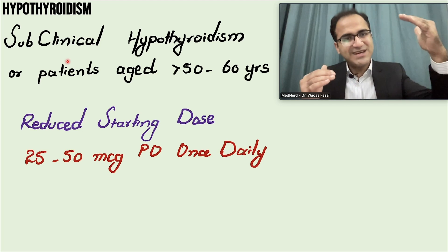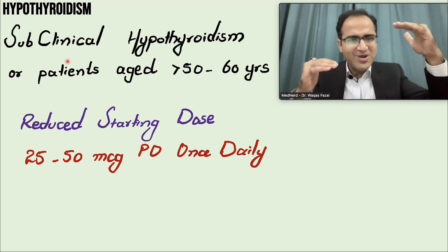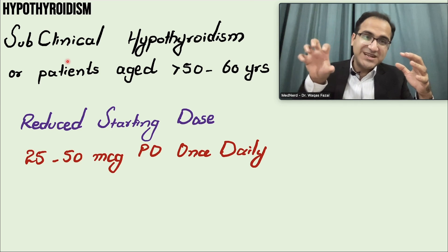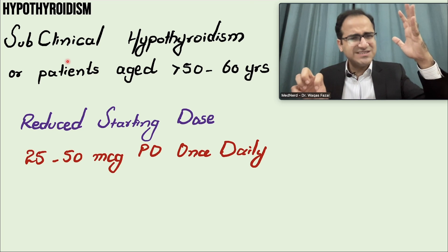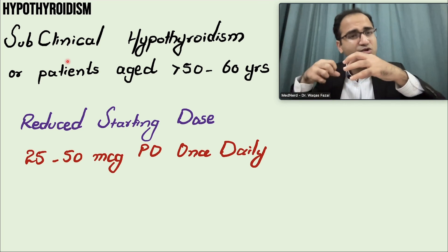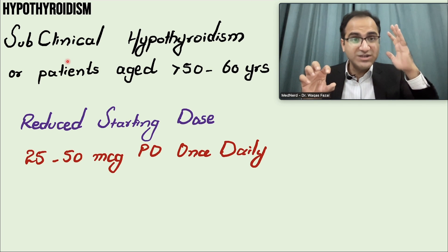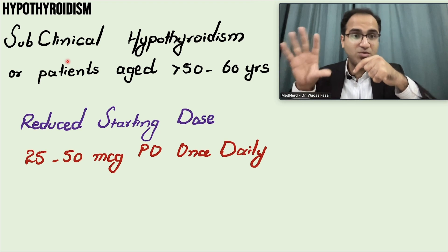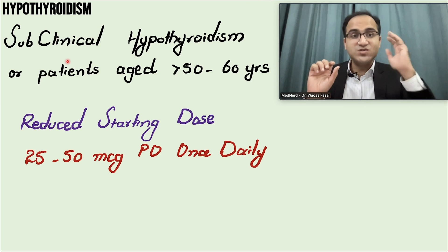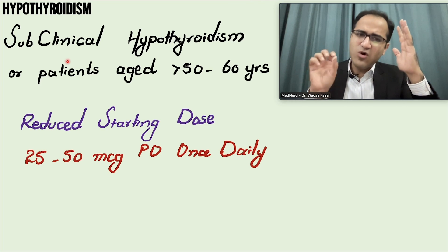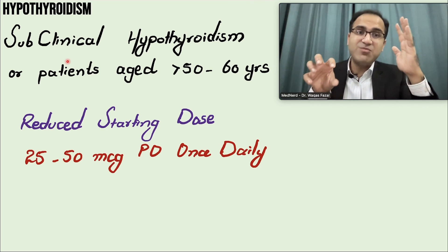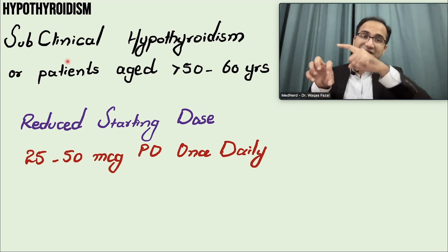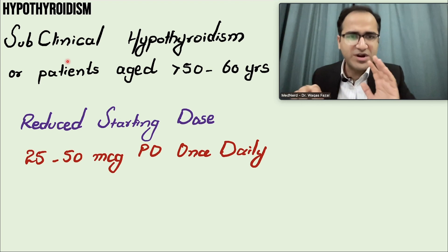In subclinical hypothyroidism, TSH levels are elevated but T3 and T4 levels are normal. This occurs because in the early stages, as the thyroid gland is failing, the pituitary produces increased TSH to push the thyroid to produce normal amounts of thyroid hormones. Without this elevated TSH, the patient would go into overt hypothyroidism — this compensated state is called subclinical hypothyroidism, but eventually this patient will progress to overt hypothyroidism.